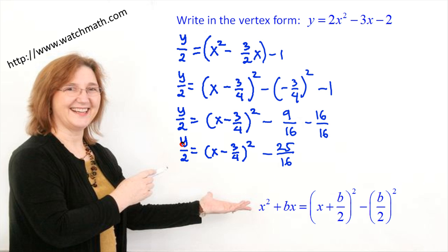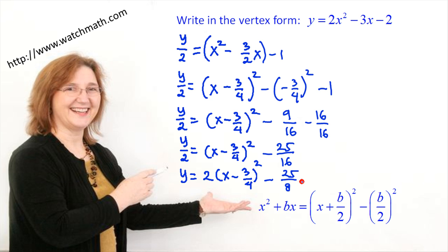Now we want to change back to y. So we multiply both sides of the equation by 2. The left-hand side becomes y, and the right-hand side becomes 2 times x minus 3/4 squared, minus 2 times 25/16, which is 25/8. This function is now in vertex form, and we can extract the vertex of the parabola, which is (3/4, negative 25/8).